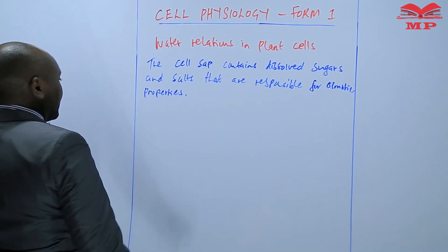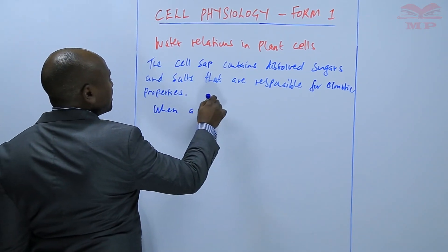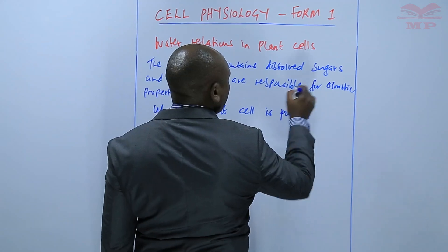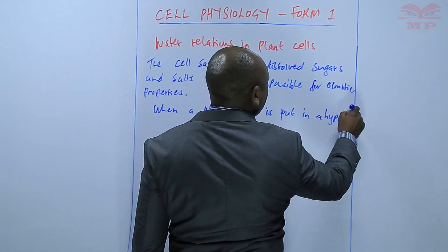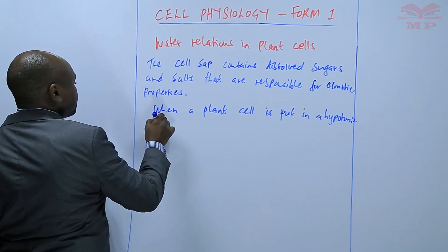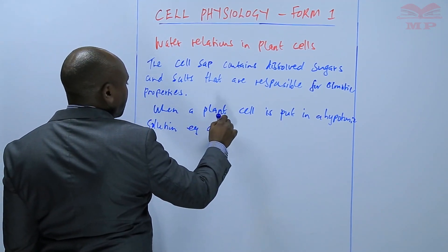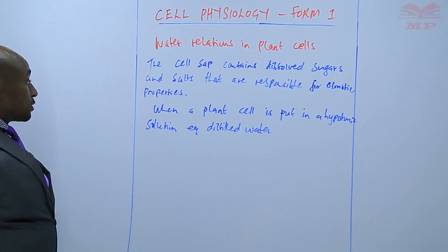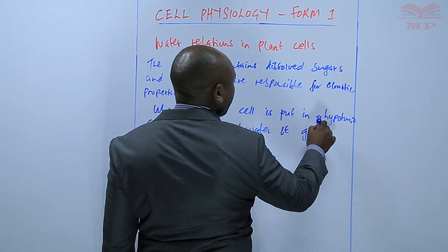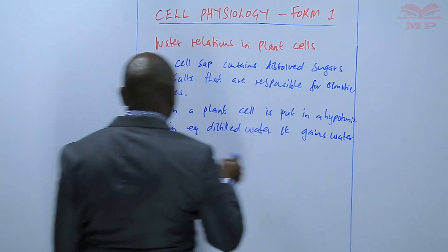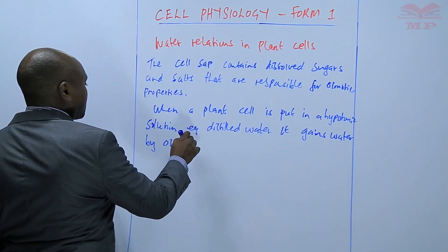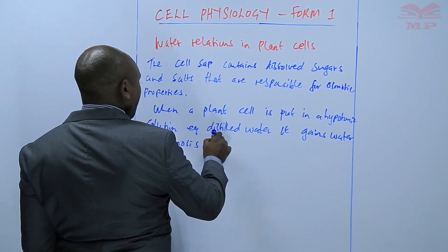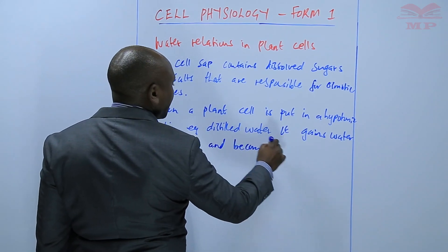Now let us take the first scenario: when a plant cell is put in a hypotonic solution, such as distilled water, it gains water by osmosis and becomes turgid.